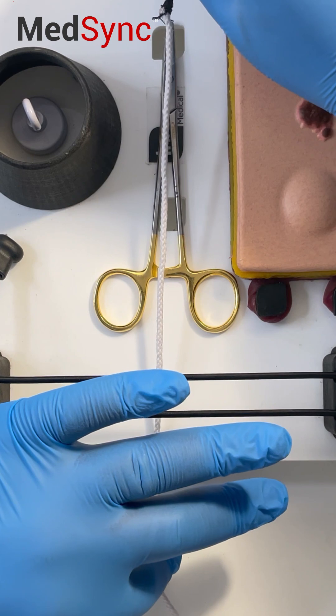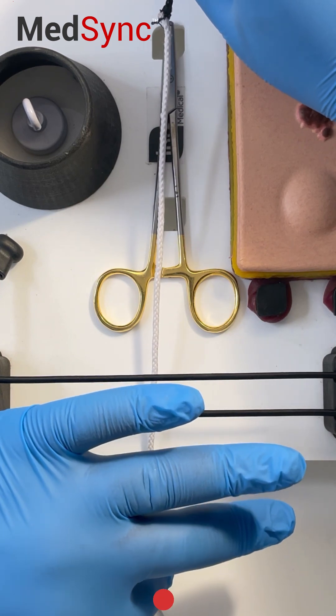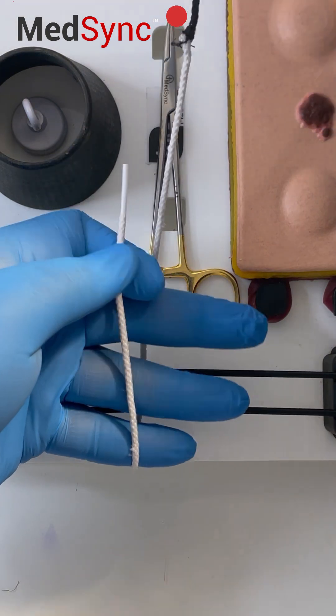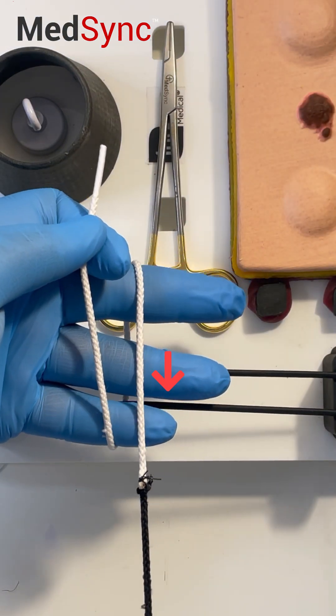You pick up the short end between thumb and index, turn your hand over. Lay the long end parallel to the short.